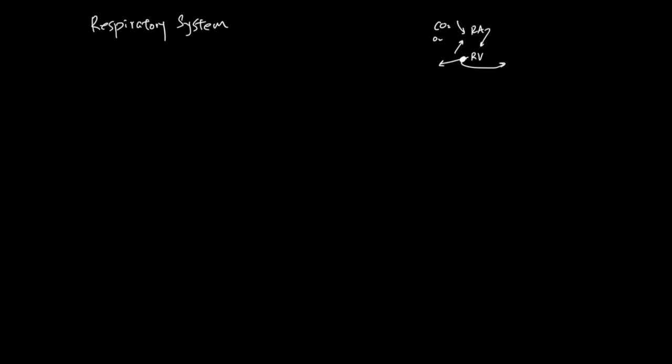And this vessel that sends the low oxygen, high carbon dioxide blood to the lung is called the pulmonary artery. And the volume of the pulmonary artery is overall about 70 milliliters.